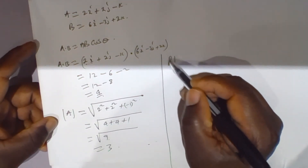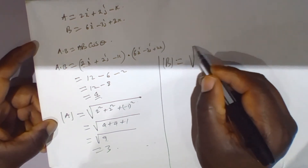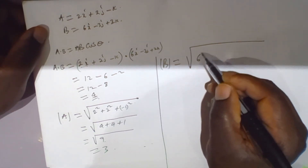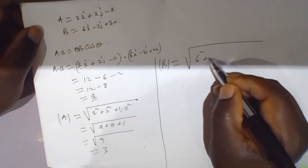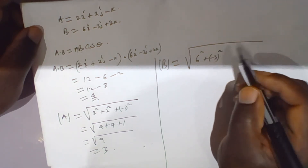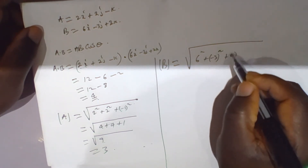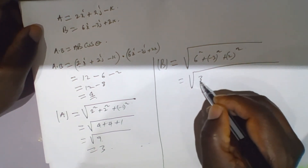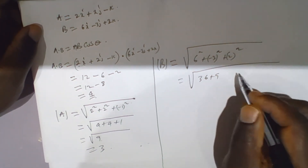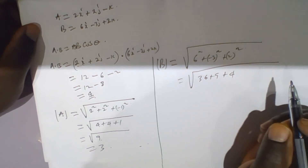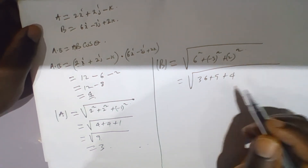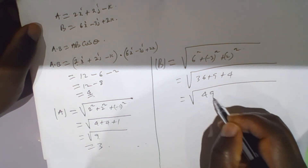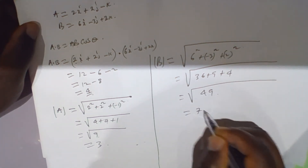The modulus of b equals the square root of 6 squared plus negative 3 squared plus 2 squared, which equals the square root of 36 plus 9 plus 4, equals the square root of 49, which equals 7.